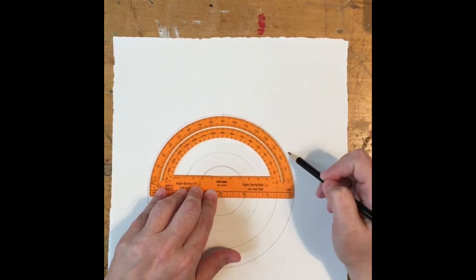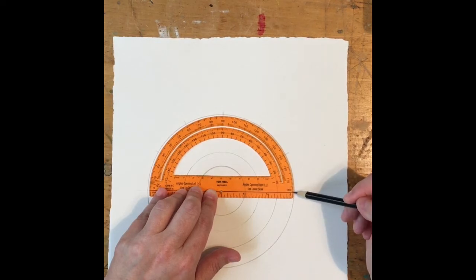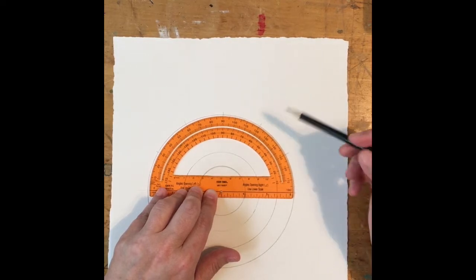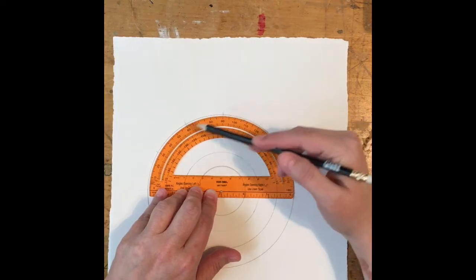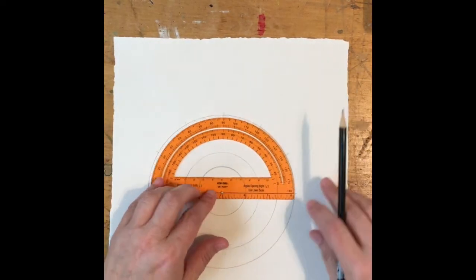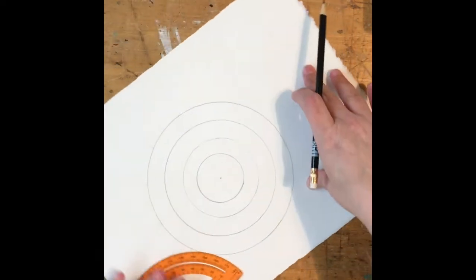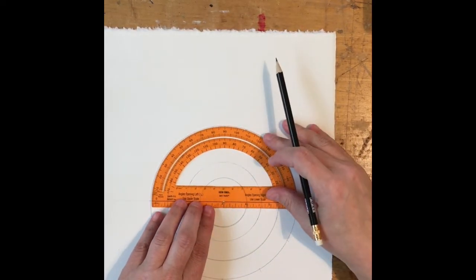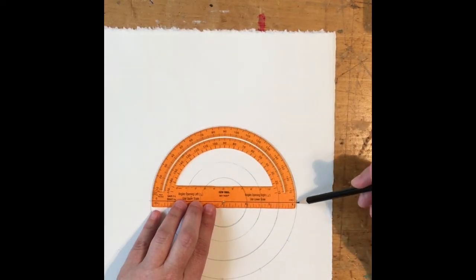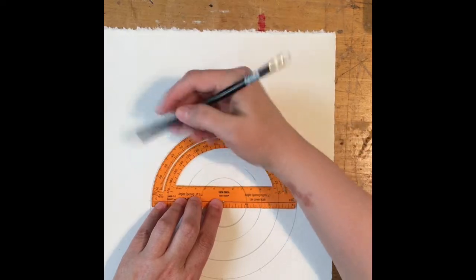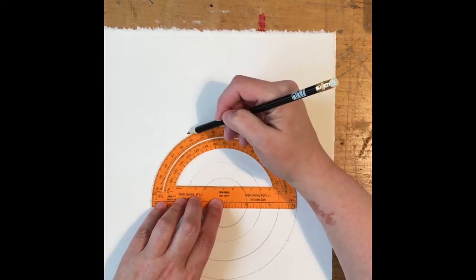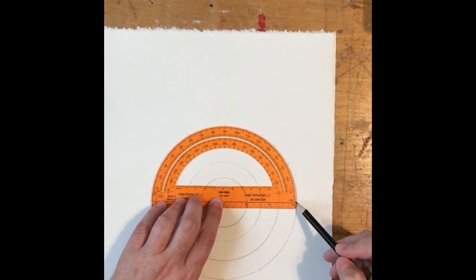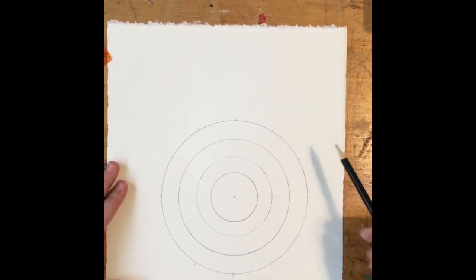And then the next one is here at 180, that is my horizon line. So you can see there's one, two, three, three sections and then three sections in between. So that's why I have marked it every 30 degrees. Now what I'm going to do is I'm going to turn this around to the other side and I'm going to place that dot right there in the very center. Make sure that this line of my protractor is on my horizon line, which it is, and I'm going to mark the 30, the 60, the 90, the 120, the 150, and then the 180 is already marked with this horizon line.